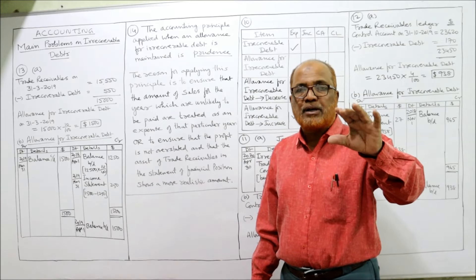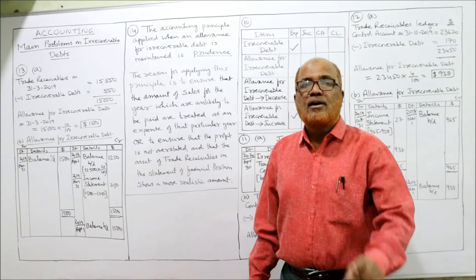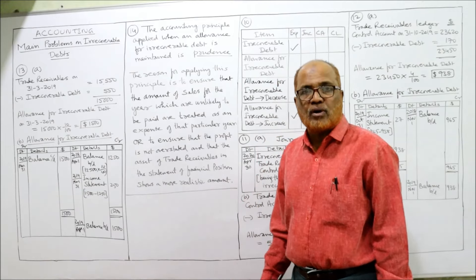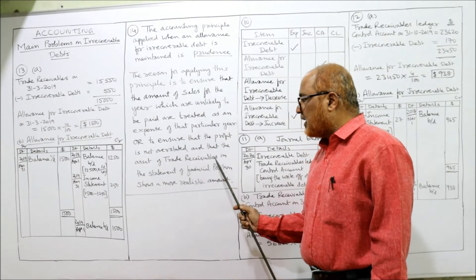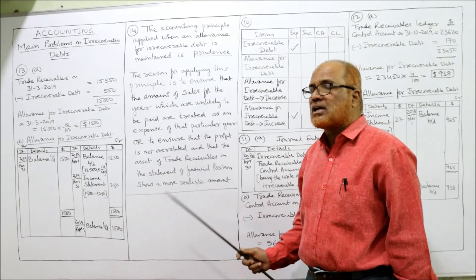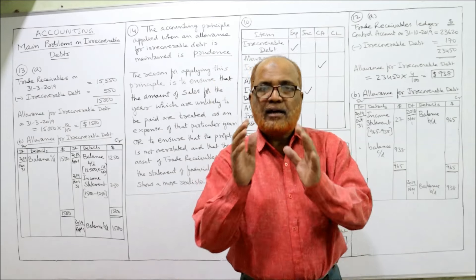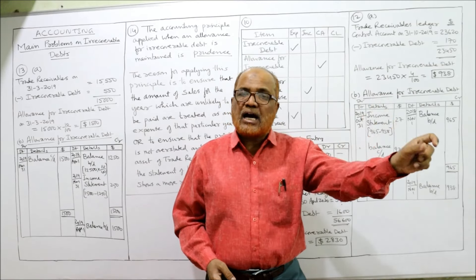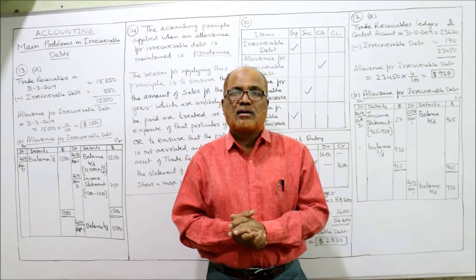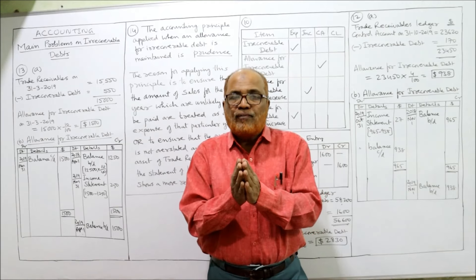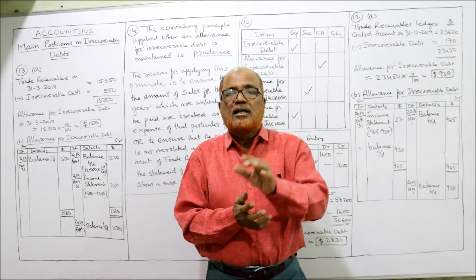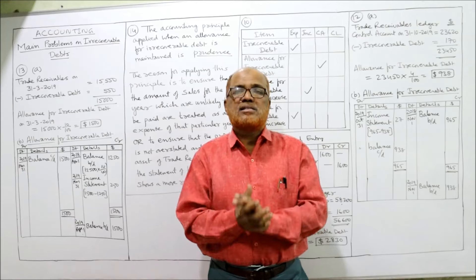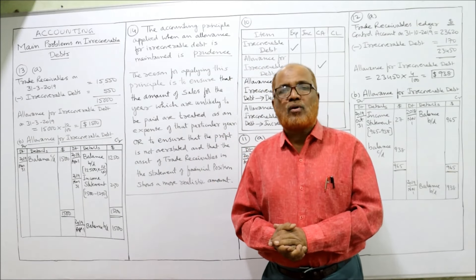We must ensure the profit shown in the income statement is not overstated. When will it be overstated? When we do not provide an allowance for irrecoverable debt. Furthermore, the asset of trade receivables in the statement of financial position should show a more realistic value. If we provide the allowance, trade receivables shown under current assets will be more realistic and true. Without the allowance, trade receivables will be overstated and unrealistic — that is why we apply this allowance.